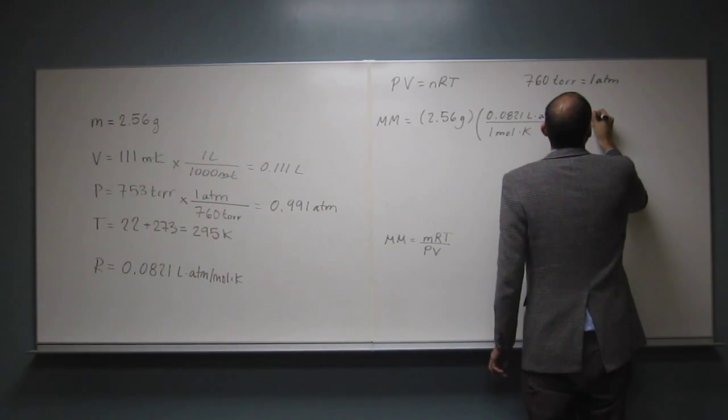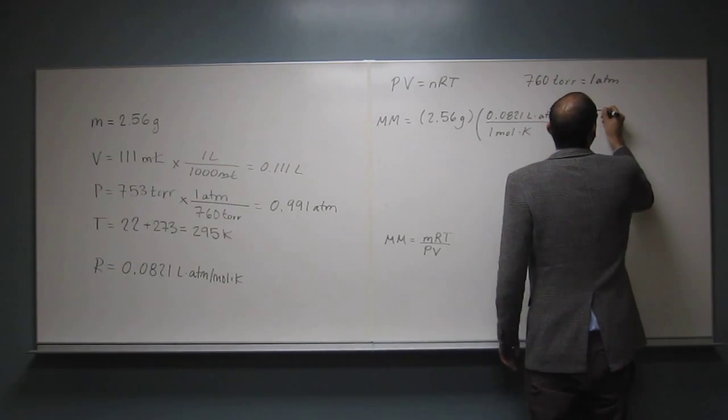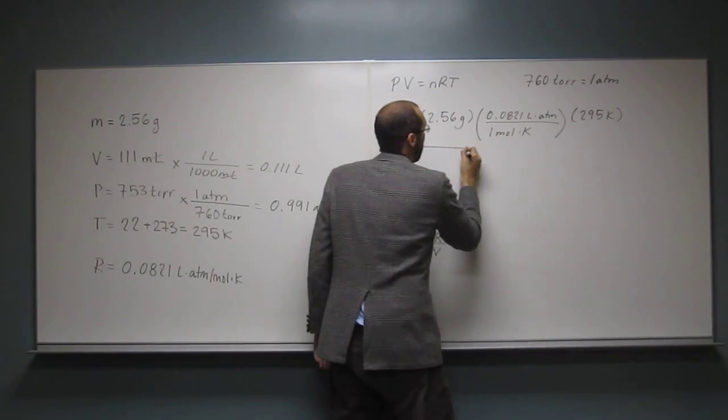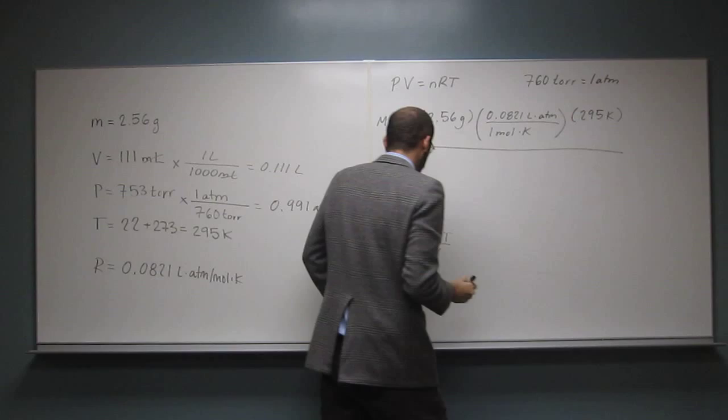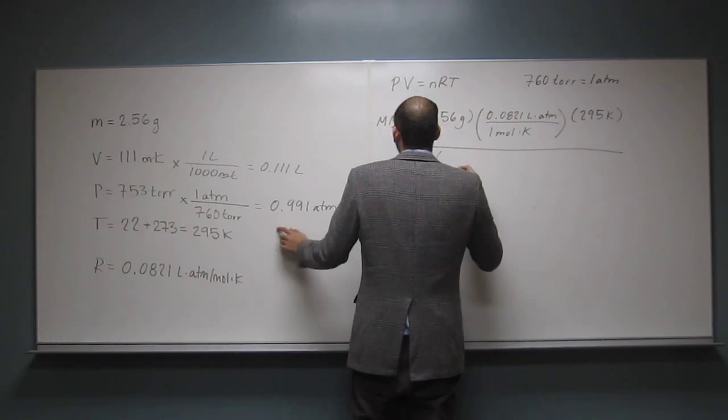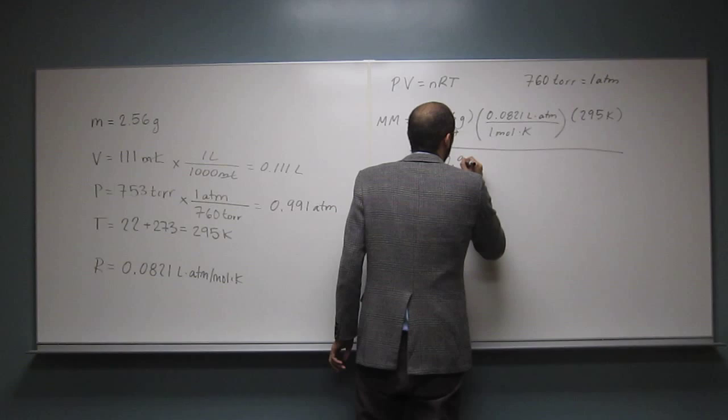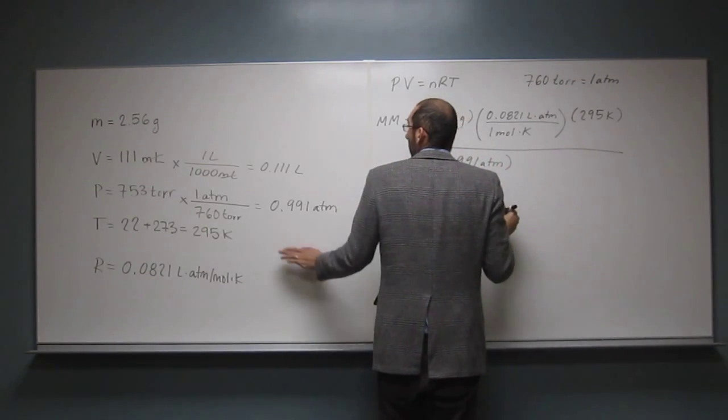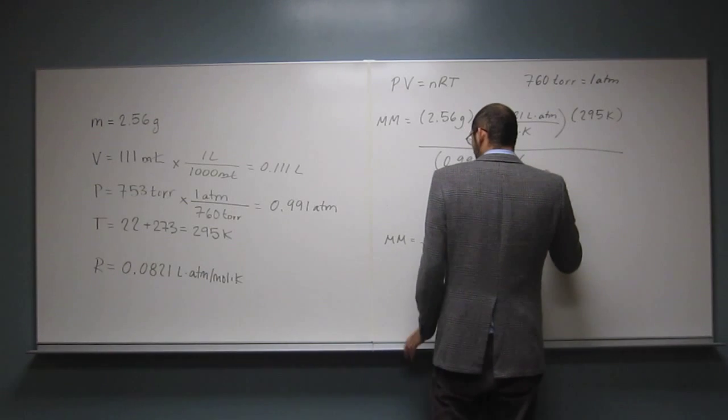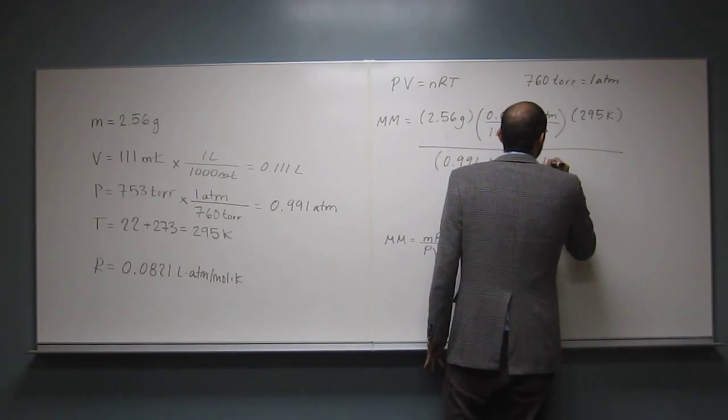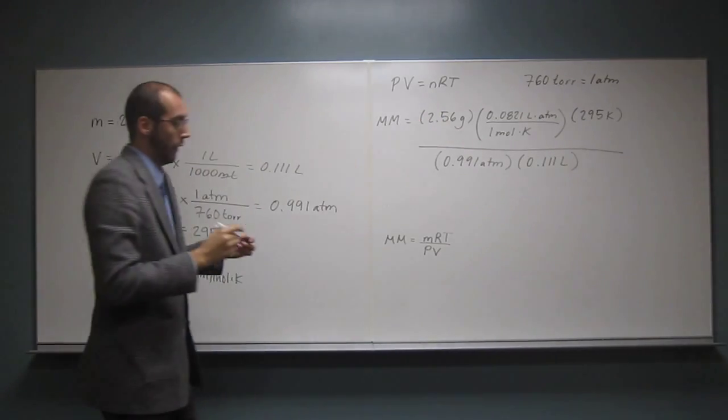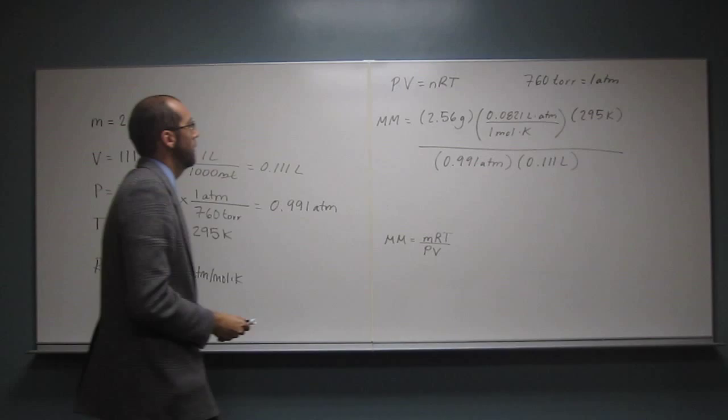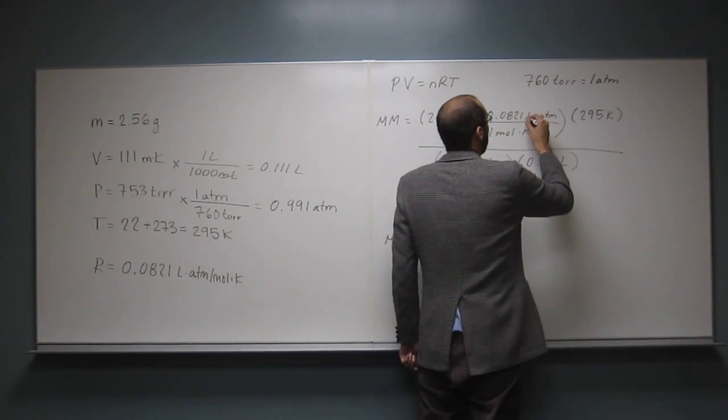295 kelvin, divide the whole thing by pressure, 0.991 atm, like that, and multiply that by volume, 0.111 liters, like that. Does that make sense? So now let's cancel, right, and see what we've got left.